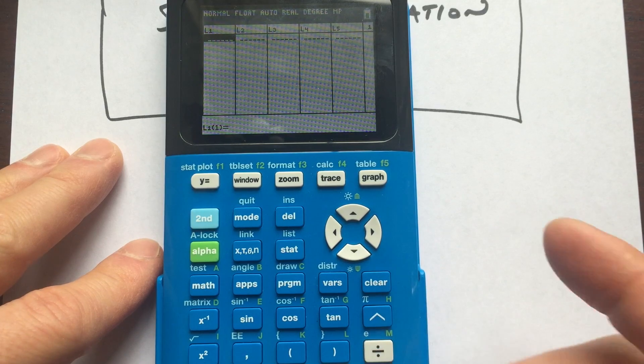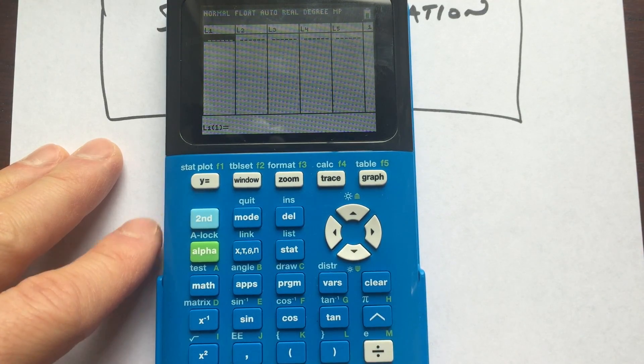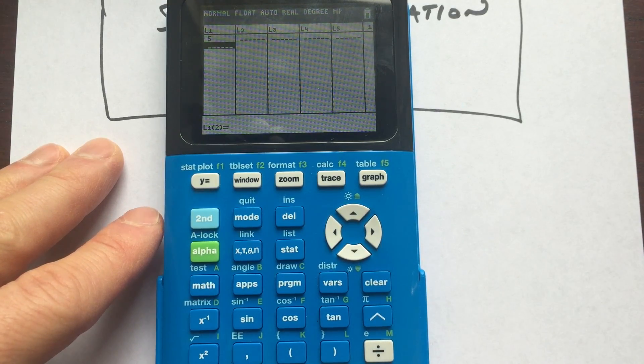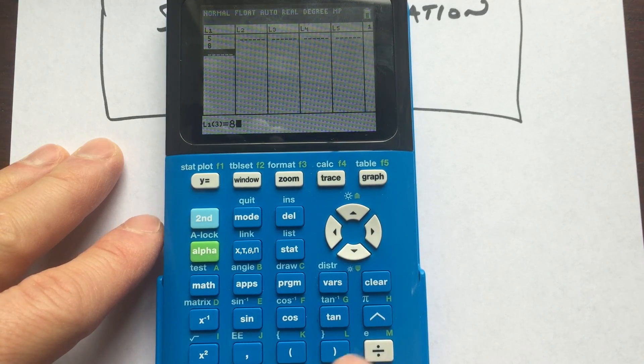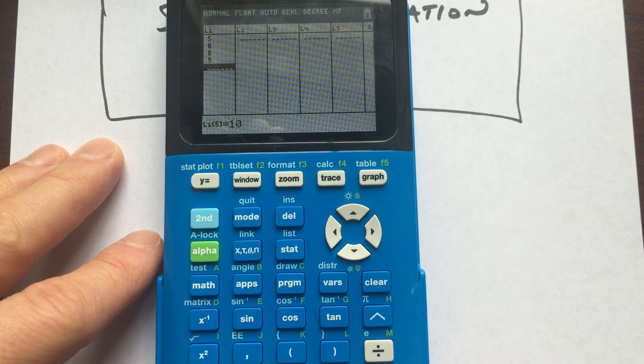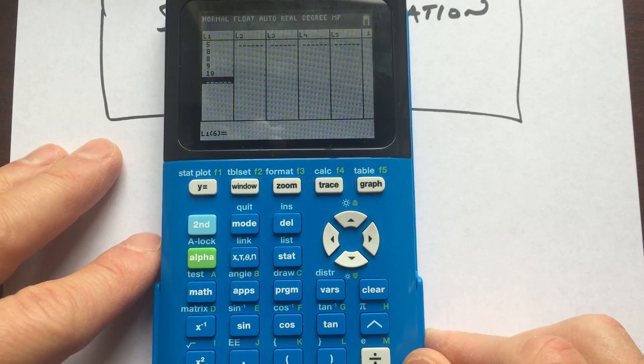So let's just say you wanted to find the standard deviation for some quiz scores. Say the quiz scores are like 5, enter, 8, 8, 9, and 10. So not a lot of data here, but I just want to show you how this works.